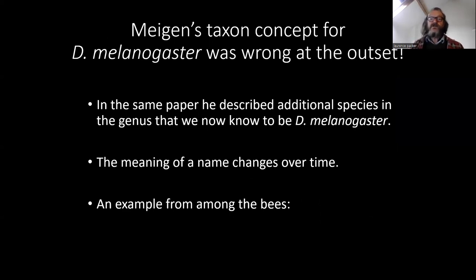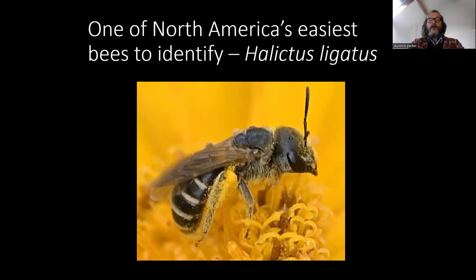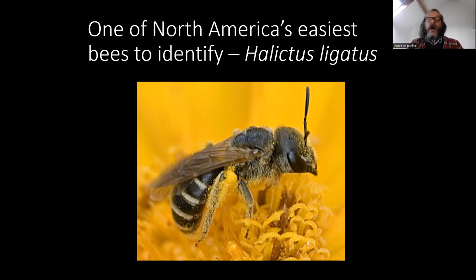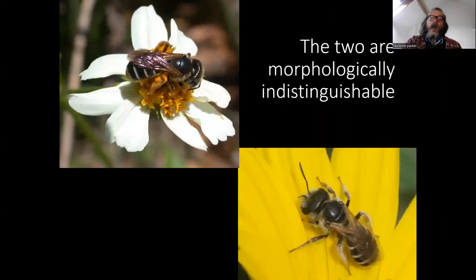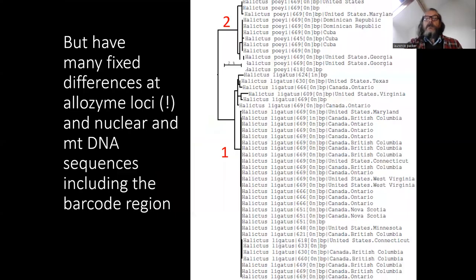We need taxon concepts because the meaning of a name changes over time. I'll give an example from among the bees. This is Halictus ligatus, one of the most easily recognized bees in North America for a century or so — if it's got the typical halictine pseudopygidial area, apical hair bands on the metasomal terga, and its head looks triangular in side view. No problem. Until 1996, when it was found that there's another genetically distinct species in the southeastern US, and you can get both of them on the same patch of flowers in the southeastern slopes of the Appalachian Mountains. They're morphologically indistinguishable, but genetically distinct.